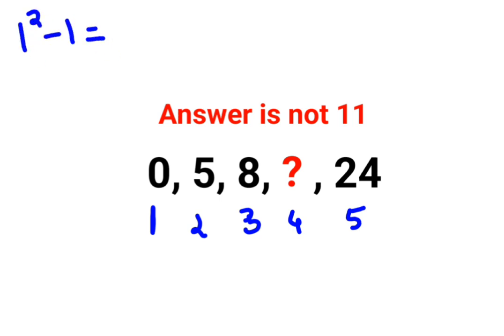Similarly, 2 squared plus 1 gets you 5. Similarly, 3 squared minus 1 gets you 8. Means there is a square and a plus minus in alternation.